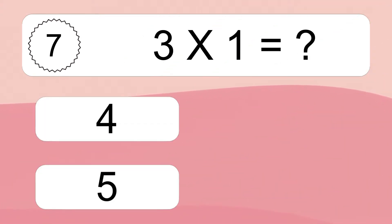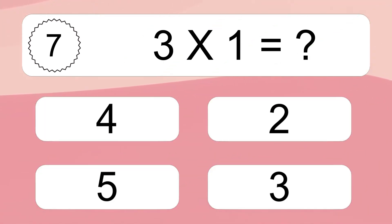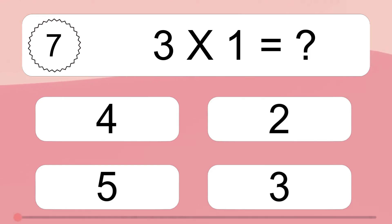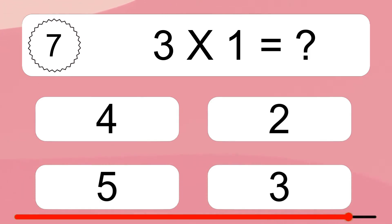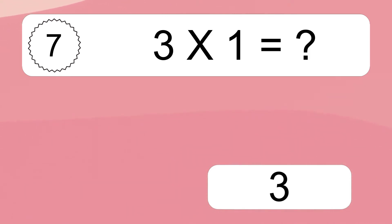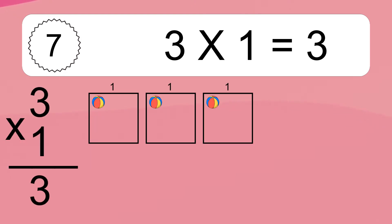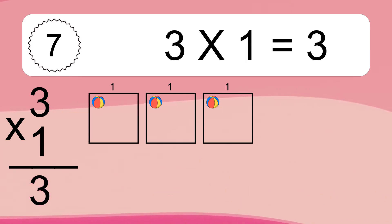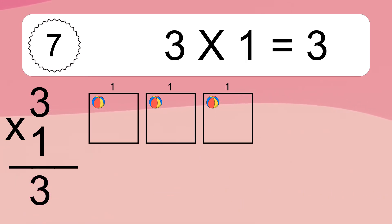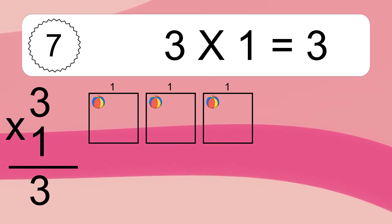3 times 1 equals what? We have 3 boxes, and each box has 1 colorful ball inside. If you count all the balls in all the boxes together, you will have 3 times 1 balls. This equals 3 balls.